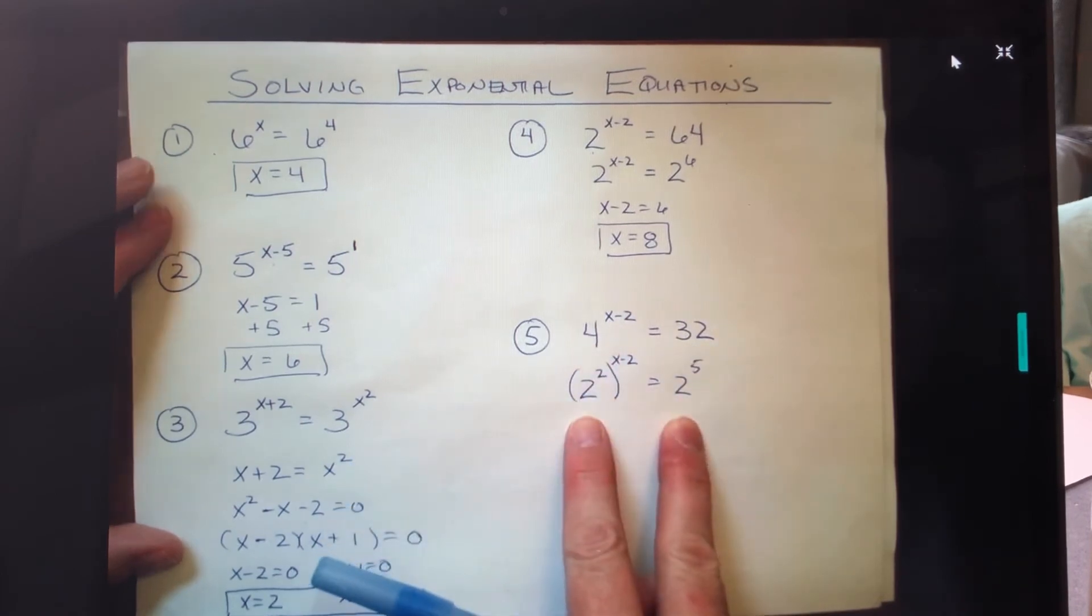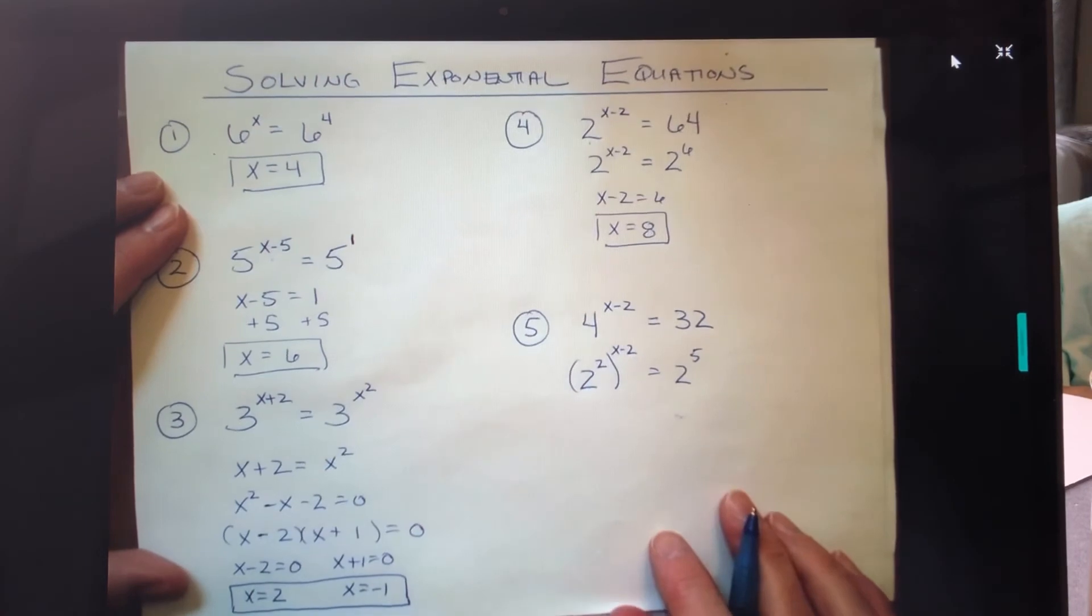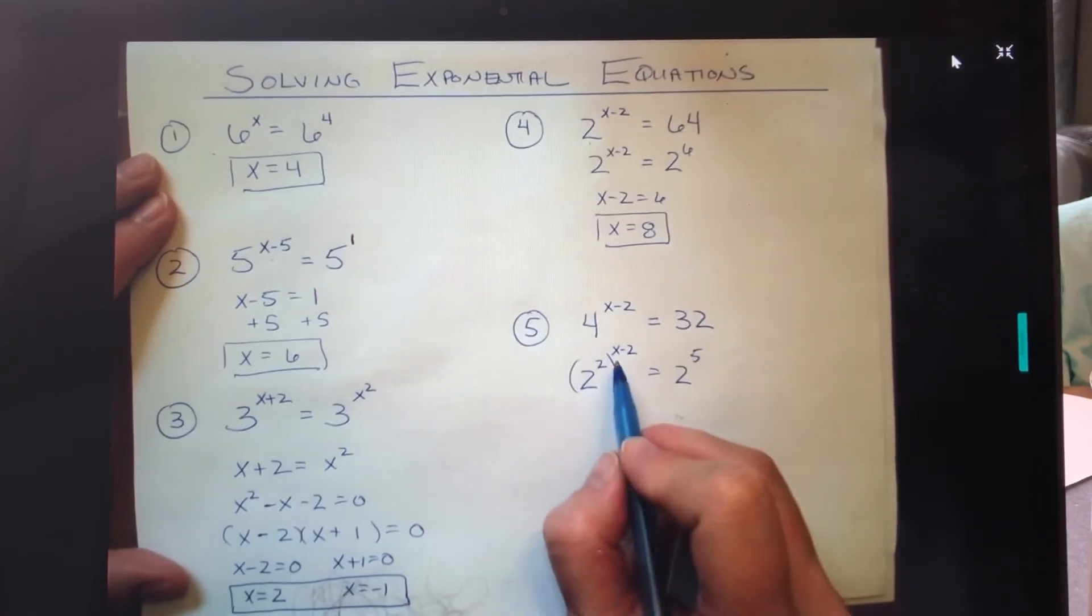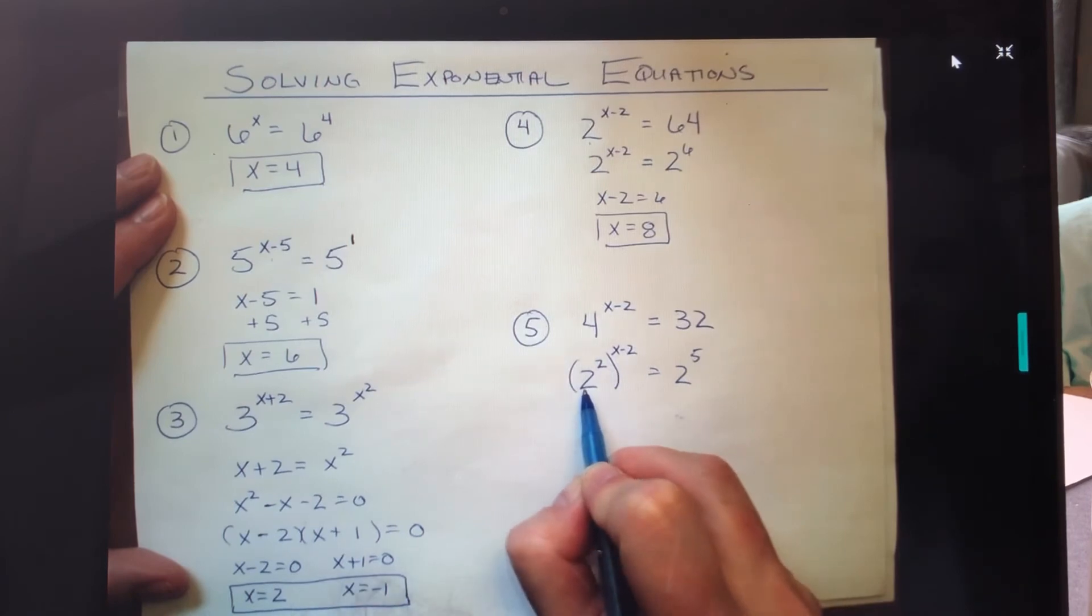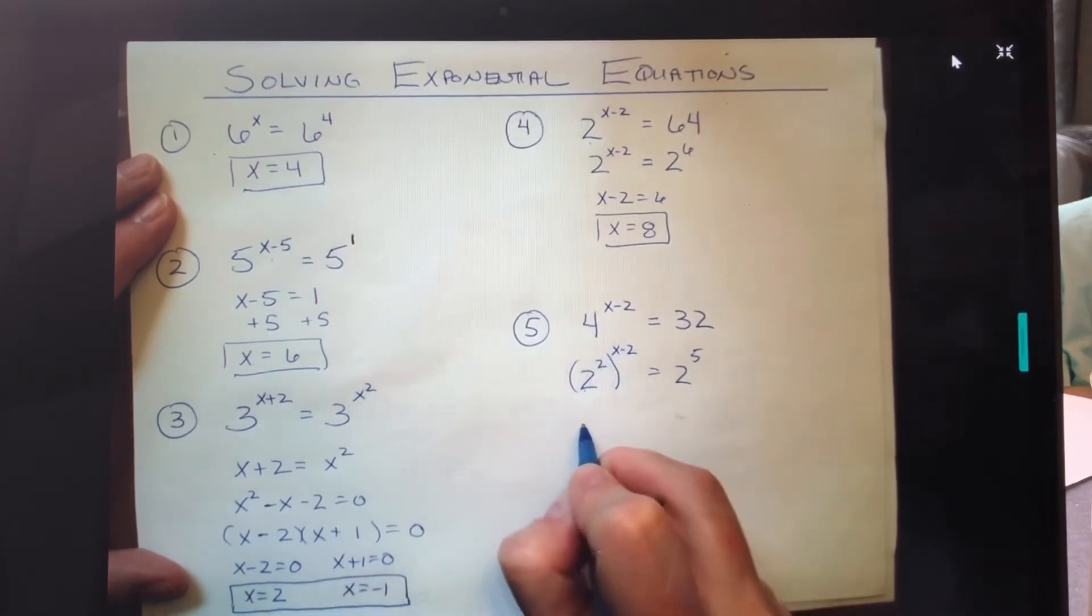And again, it's going to be the fastest way to solve it. If you remember from your exponent rules, if you have a base to a power to a power, we're going to multiply those powers together. So I'm going to rewrite this like this: first, 2 to the 2 times x minus 2, and that equals 2 to the fifth.